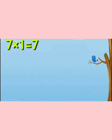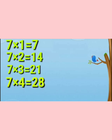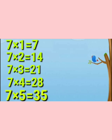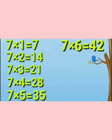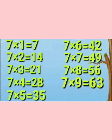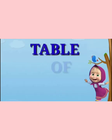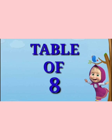Now repeat: 7 ones are 7, 7 twos are 14, 7 threes are 21, 7 fours are 28, 7 fives are 35, 7 sixes are 42, 7 sevens are 49, 7 eights are 56, 7 nines are 63, 7 tens are 70. Now next table is table of 8.